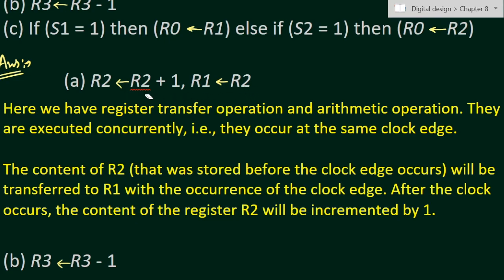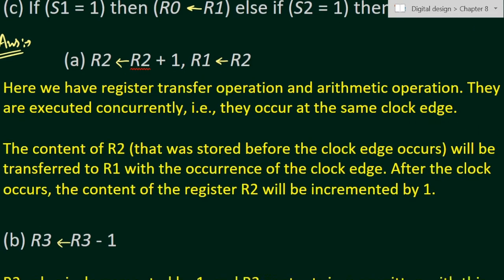The content of R2 that was stored before the clock edge occurs will be transferred to R1 with the occurrence of the clock edge. At the same clock edge, the content of register R2 will be incremented by one. Because we have two concurrent statements, the previously stored R2 value will be incremented by one and R2 will be overwritten with the incremented value.